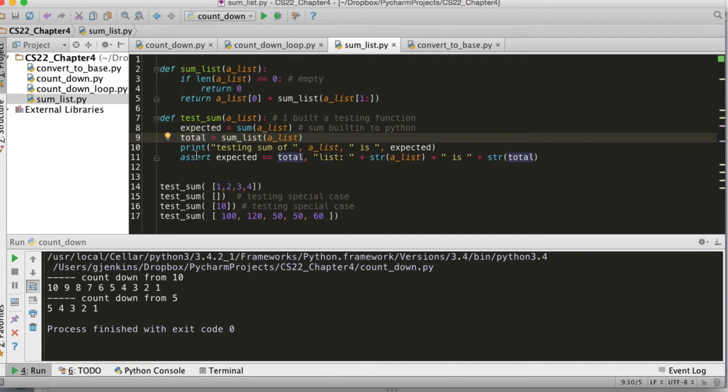Then it has total calling our method sum a list. These should be the same. It prints testing sum of a list is the expected value. It prints what it found, then has an assertion statement. It asserts expected equals total. If it fails, it's going to print out the list and the total so you'll see how it failed. We'll run it and test it on a list of four items, an empty list—you want to check special cases and an empty list is a special case. We also test it on one item and give it some bigger values. Here's a list of five items with some big values.